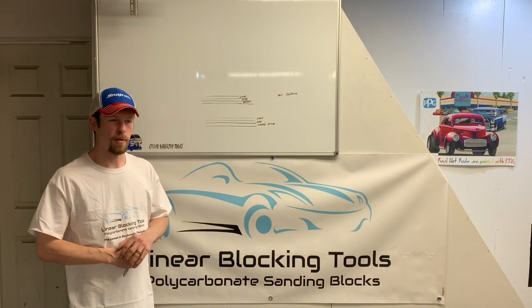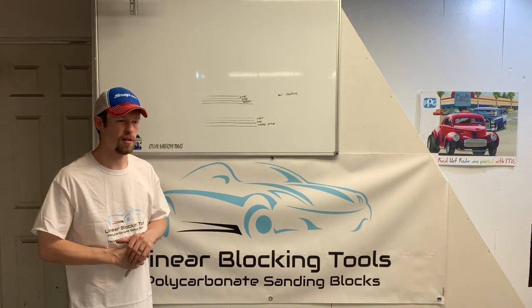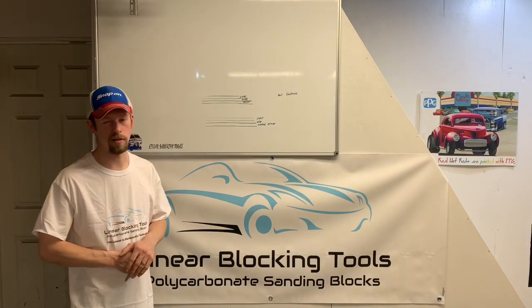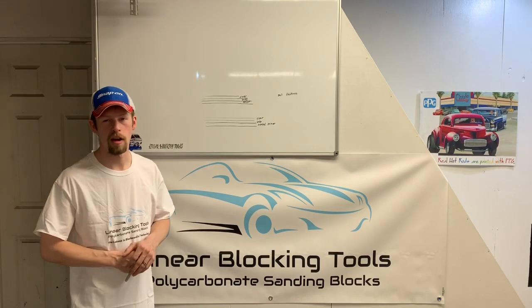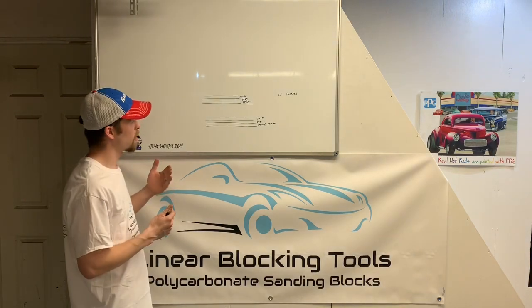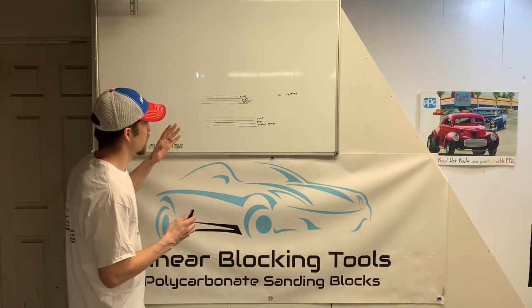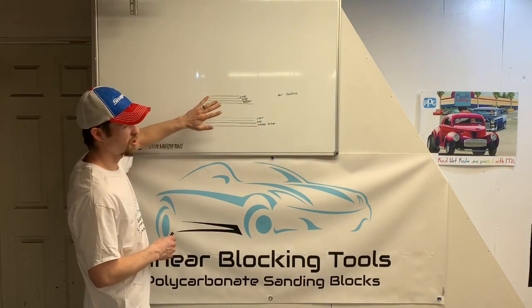Isocyanates are basically the backbone of the cross-linking process. Most products that are a 2k product have an activator that's going to have isocyanates in it. What the isocyanates do is allow a chemical reaction for cross-linking, and when you have chemical adhesion it's much better than relying only on physical adhesion. So if I'm using a sealer...